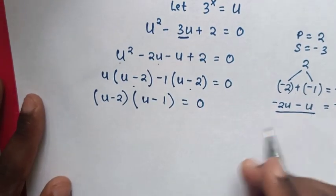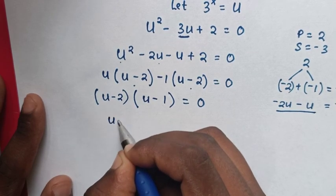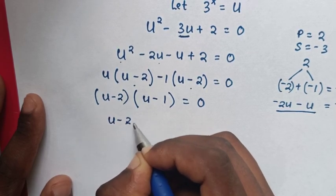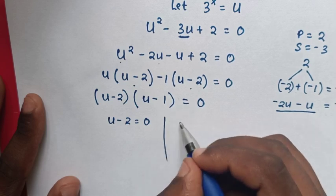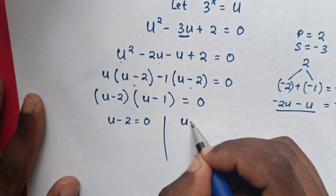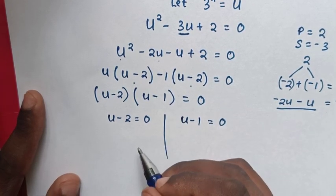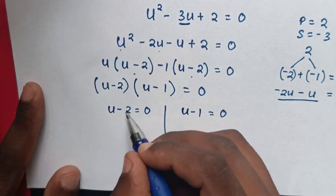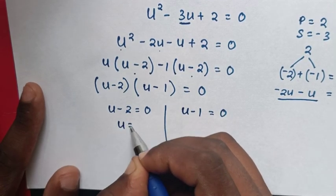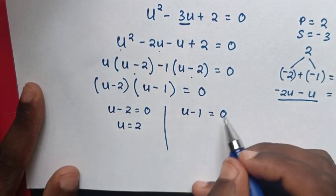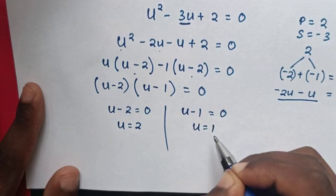Then in the next step we have two cases: u minus 2 equals 0, giving u equals 2, and u minus 1 equals 0, giving u equals 1.